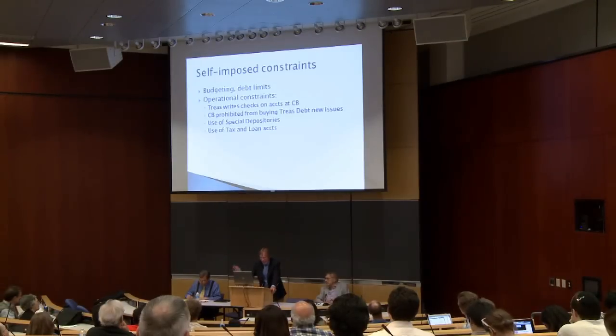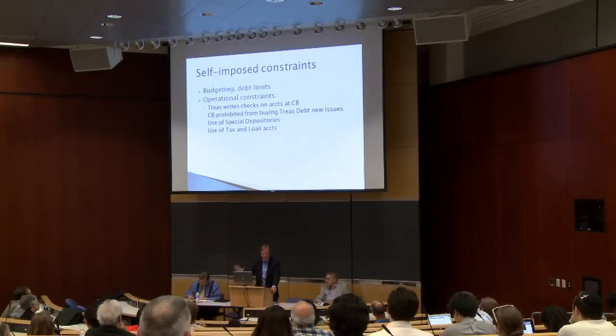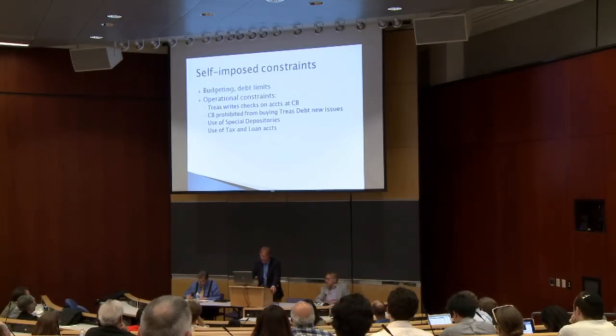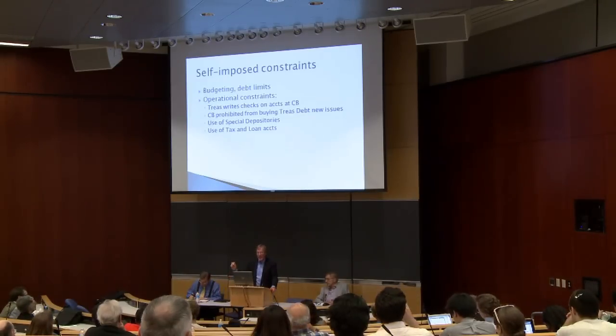We also have operational constraints. People will say the treasury has to write checks on its account at the central bank — the Fed. This is true. The treasury has to have money in its account at the central bank, but we found ways to make sure it always has money in its account so it doesn't bounce checks to social security recipients. The central bank is also prohibited from buying treasury debt new issues directly — but we get around this easily. The treasury sells bonds to banks and then the treasury's account at private banks is moved to the Fed, and then the Fed buys the bonds from the banks. So we get around it easily — the point is it's self-imposed.